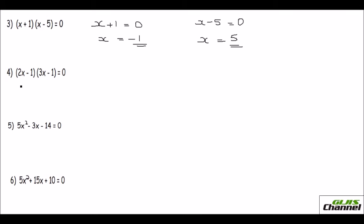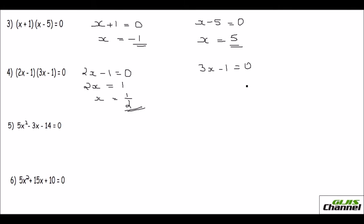The fourth one is also given in factor form, but there is a slight difference in how you find x. For 2x minus 1 equals 0: keep 2x on the left, take negative 1 to the other side to get positive 1, then divide by 2 to get x equals one half. For 3x minus 1 equals 0: take negative 1 to the other side to get 3x equals 1, then divide by 3 to get x equals one third.